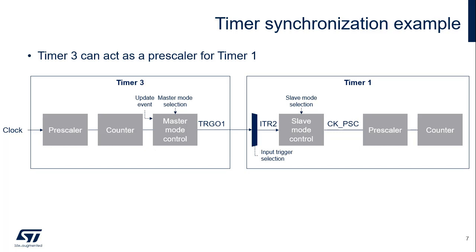The slave mode selection field configures the slave mode operation: disabled, encoder, reset, gated, external clock, or combined reset. In this example, the external clock mode is selected.